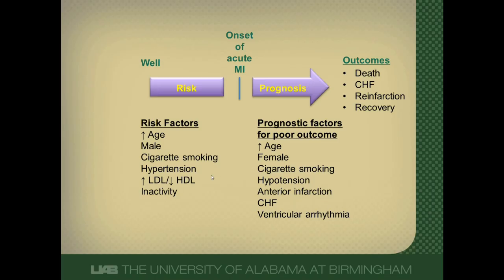One interesting example is blood pressure, which shows a different relationship between being a risk factor versus a prognostic factor. High blood pressure is a risk factor for an MI, whereas low blood pressure might actually protect you from developing an MI. But once you've had an MI, having low blood pressure is a very bad thing — it predicts very bad outcomes.